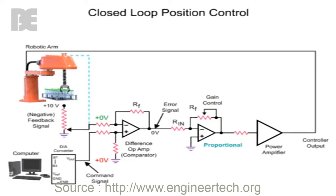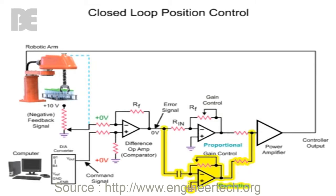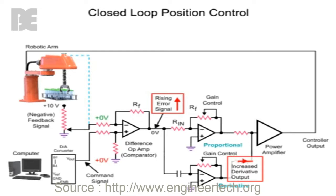To achieve a fast response time and minimize overshoot of the desired position, a derivative amplifier is added to the circuit. The derivative amplifier produces an output while the signal applied to its input is changing. As the arm lags behind the command signal, the error signal generated causes the derivative amplifier to produce a voltage that adds to the output of the proportional amplifier. The sum of both voltages is applied to the power amp, which results in the robotic arm accelerating at a similar rate to the changing command signal.